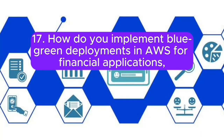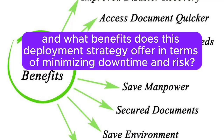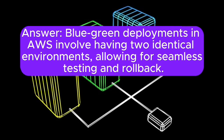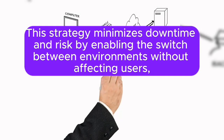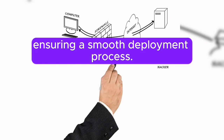Question 17: How do you implement blue-green deployments in AWS for financial applications, and what benefits does this deployment strategy offer in terms of minimizing downtime and risk? Answer: Blue-green deployments in AWS involve having two identical environments, allowing for seamless testing and rollback. This strategy minimizes downtime and risk by enabling the switch between environments without affecting users, ensuring a smooth deployment process.